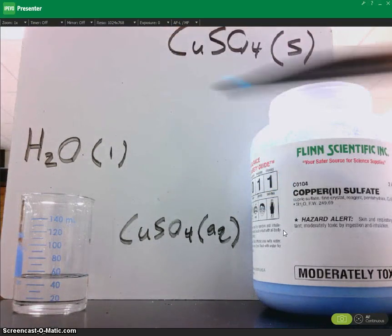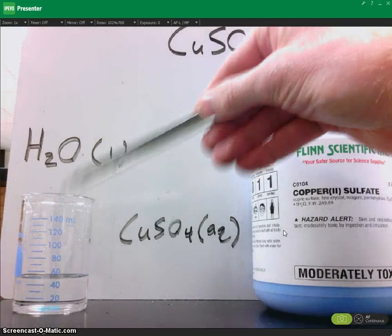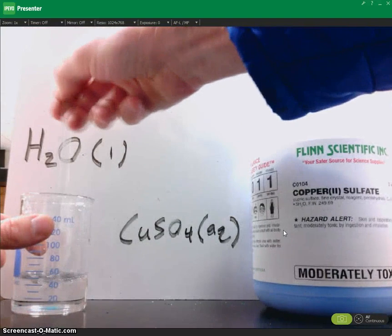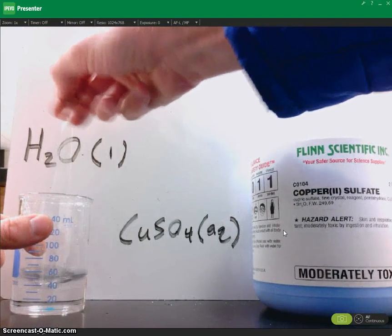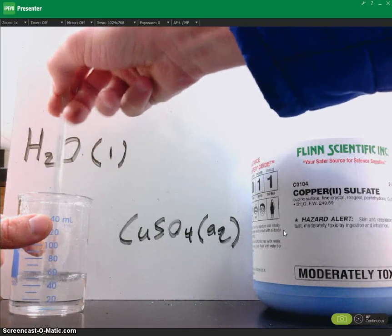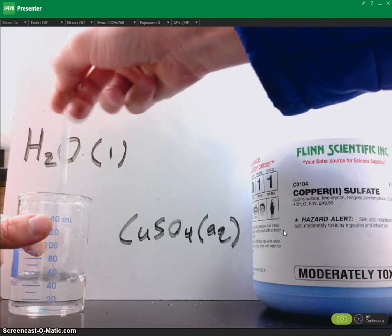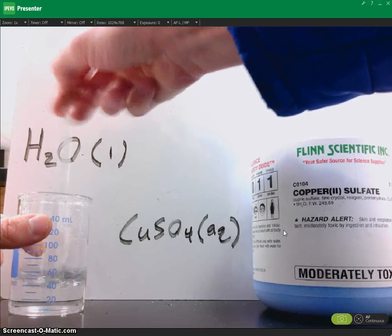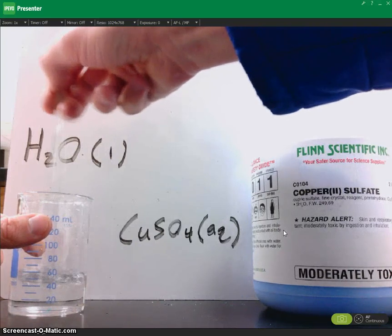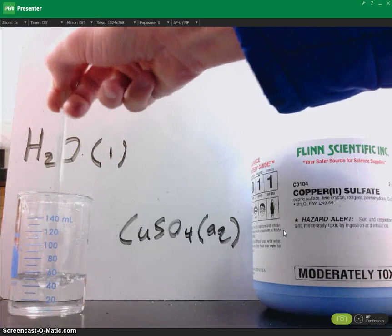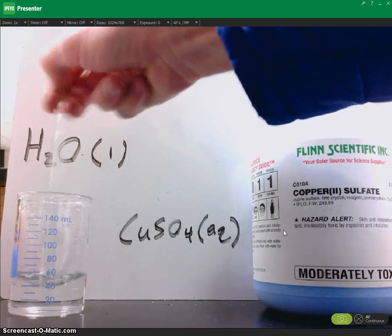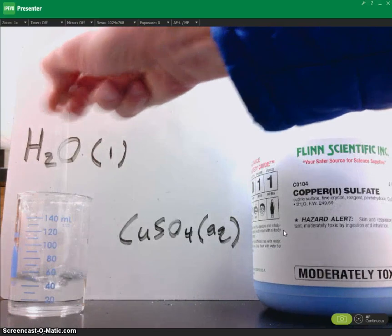Now let's take this copper(II) sulfate that's a solid and put it in the liquid water. We're going to stir this, and what should happen is the copper(II) sulfate should dissolve into ions — splitting up into copper ions and sulfate ions. It will appear as if the copper(II) sulfate is disappearing, but because of the law of conservation of mass, it's really not disappearing. It's simply dissolving into the solution.